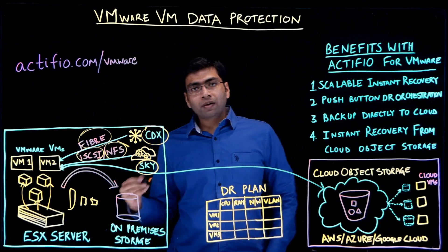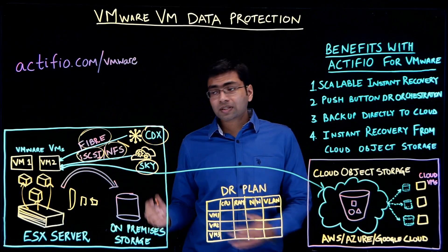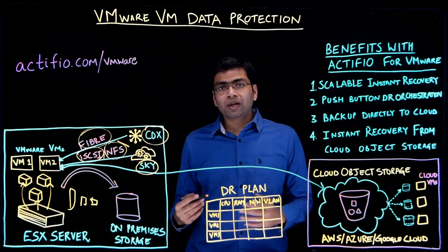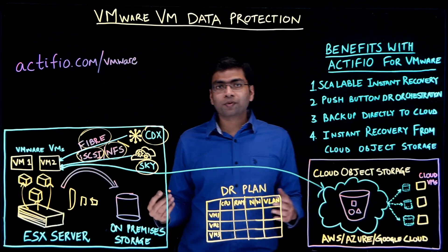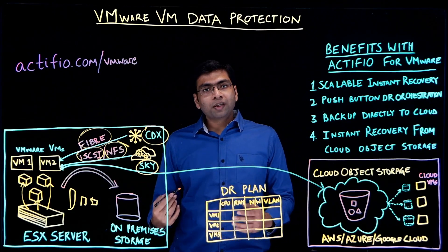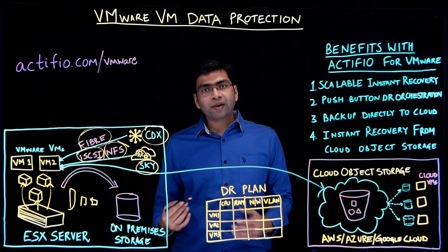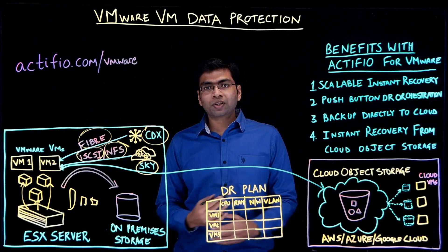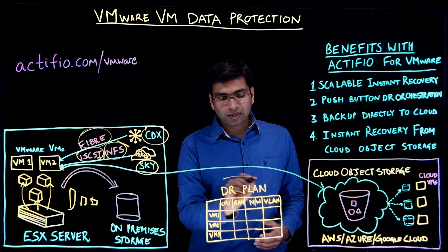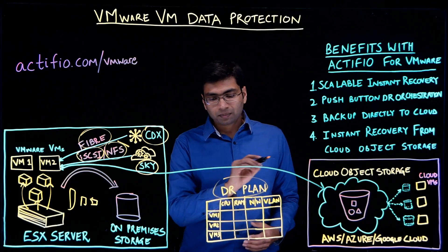For recovering a few VMs this is great, but what if you have to recover thousands of VMs to a secondary DR site? With Actifio you can specify the order in which you want to recover the VMs via a DR plan.